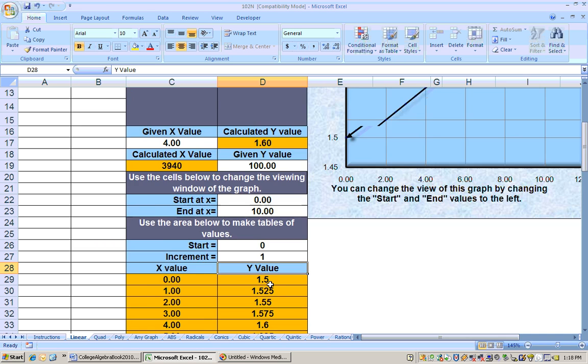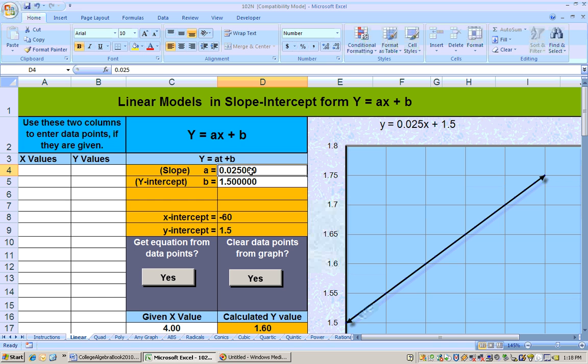I can see here that the cost is going up by 0.025. That's how much the cost is going up. And that's what the slope actually tells us, that the cost is going up by 2.5 cents every year. So that would do it for that problem.